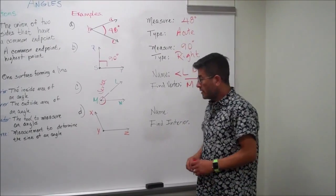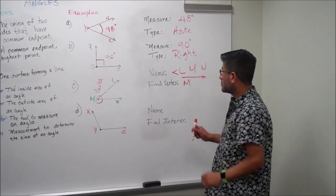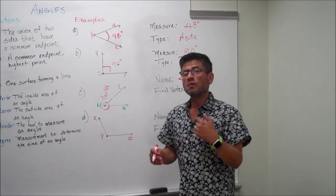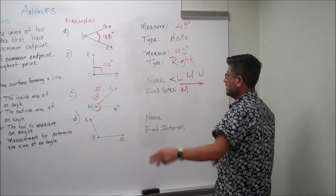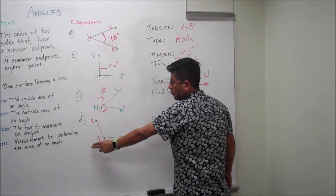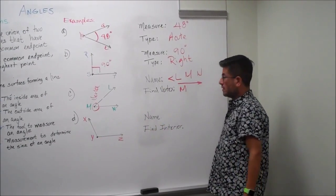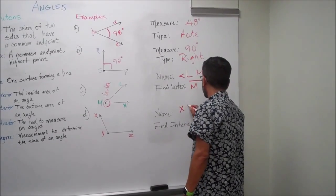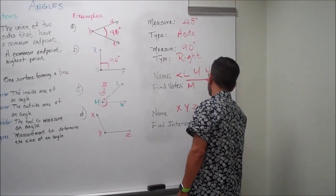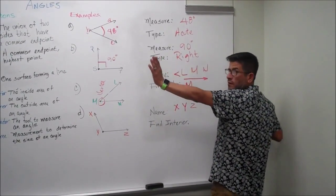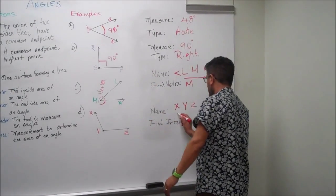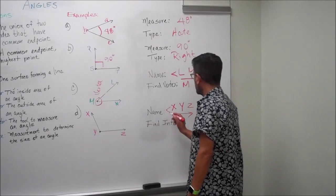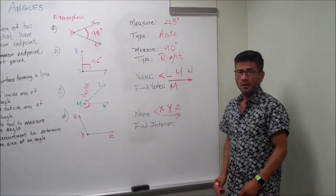On the last one, it's asking us to name the angle again. Remember from the last one, we go from left to right. We have X, Y, Z. So the name is going to be X, Y, Z — from left to right. A little arrow right here and the little symbol to tell you that it's an angle.